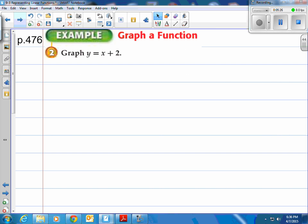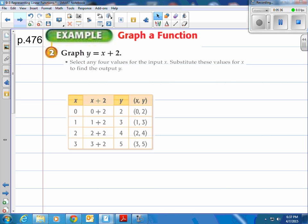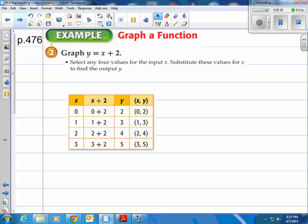All right. Let's take a look at example 2 here. It says graph a function. It says graph y equals x plus 2. Well, what do we do first? It says select any four values for the input x. Now this is no story involved. Just here, graph this equation. And you gotta remember these equations are linear equations. They're gonna generate lines here. Select any four values for the input x. Substitute these values for x to find the output y. And they've done that for us here. They've given 0, 1, 2, and 3 for x. They've plugged it in. And they've gotten the y values out. And then they put them into an ordered pair.